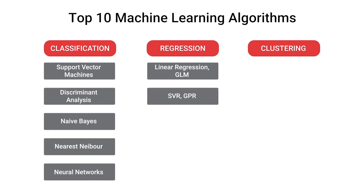The support vector machine can be used for regression and it can be used for classification as well. If it is classification, this becomes a support vector classification; if it is regression, it becomes support vector regression. So those techniques are interdependent.